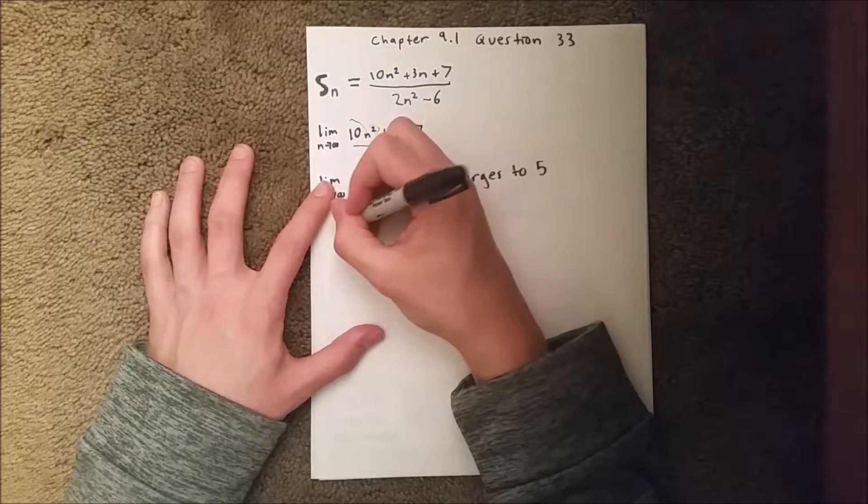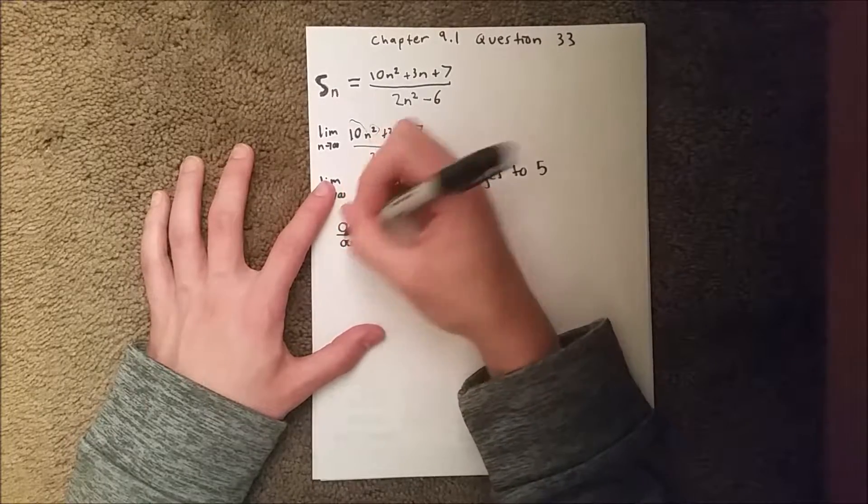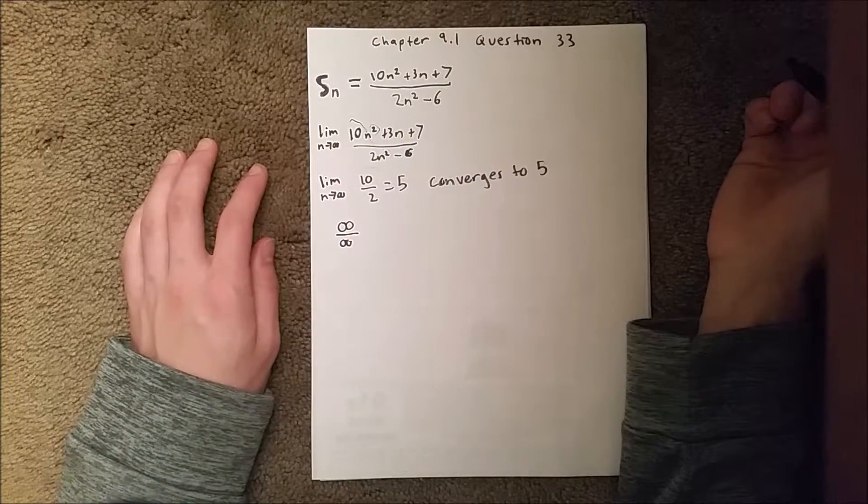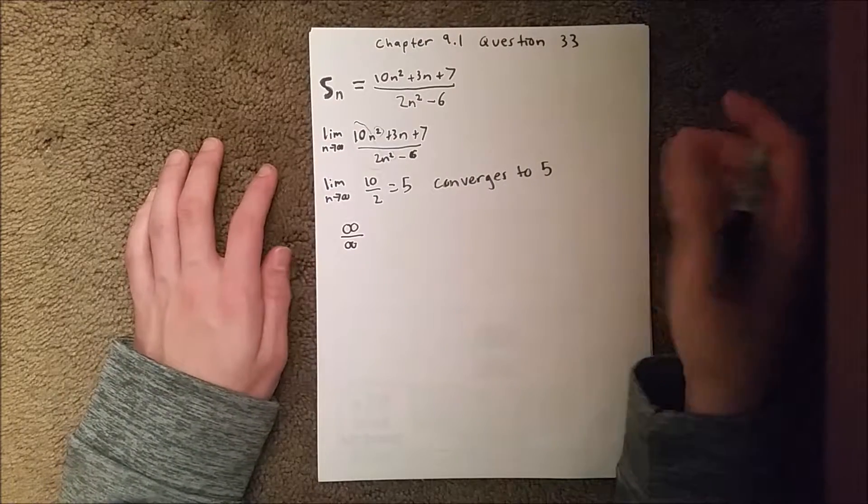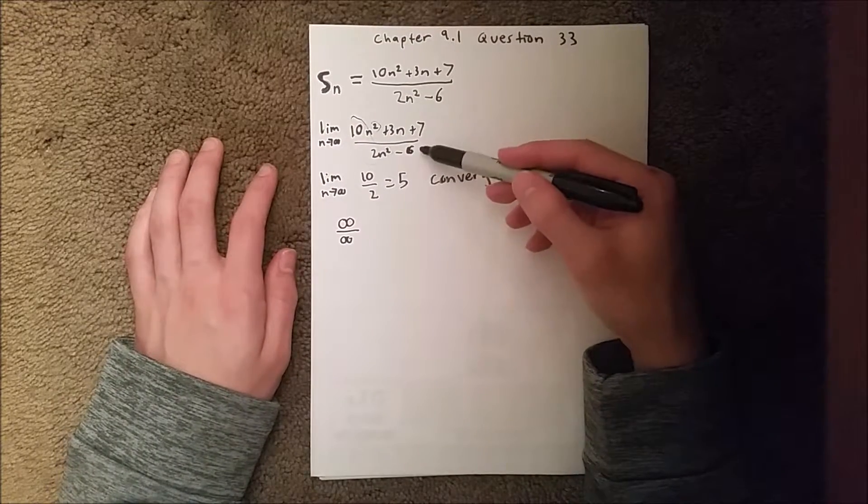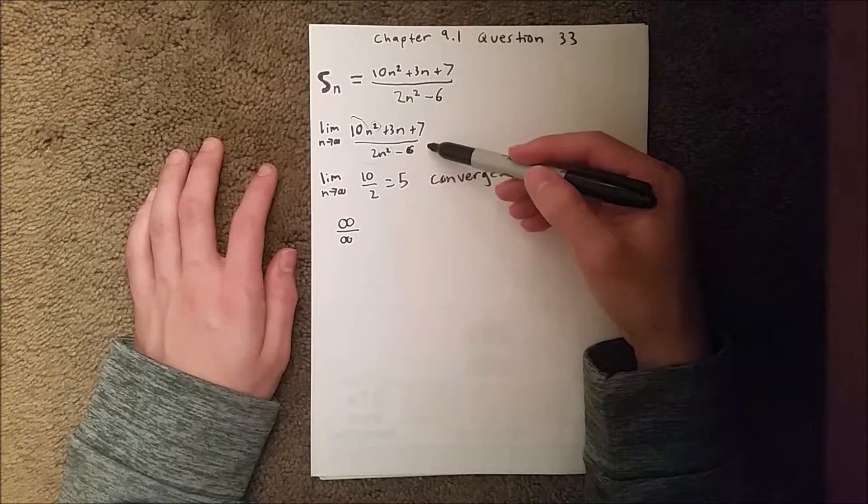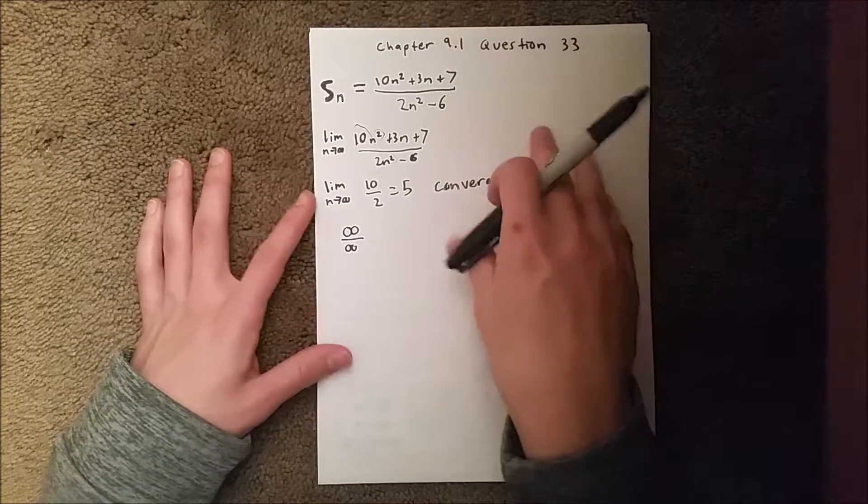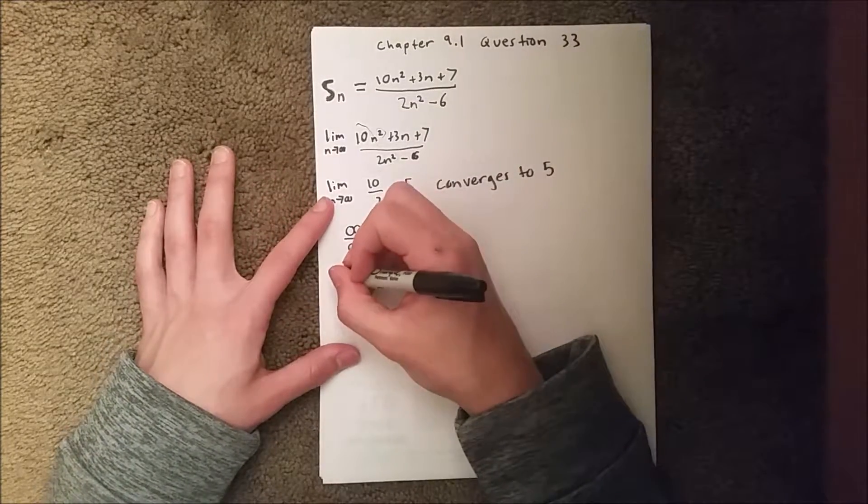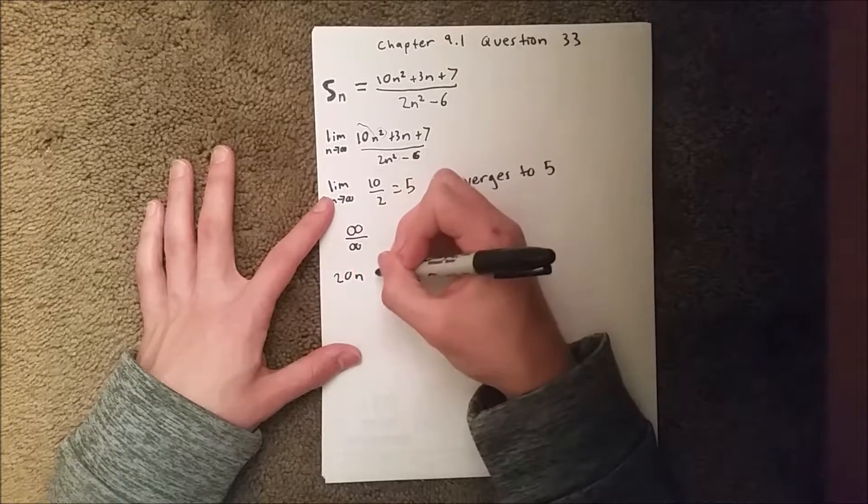So you'd have to take the derivative of the top and derivative of the bottom respectively. So the derivatives would become 20n + 3 over 4n.